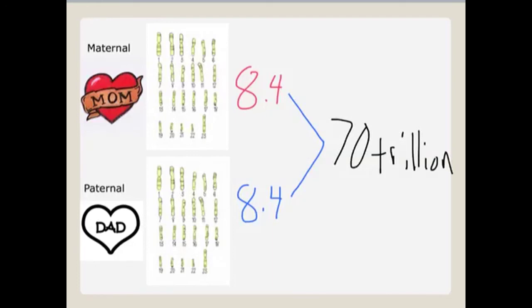This 70 trillion doesn't factor in the crossing over of 20,000 different genes. Once you factor that in, the possibilities become almost infinite.